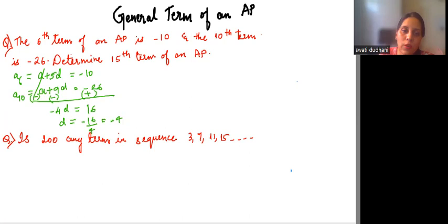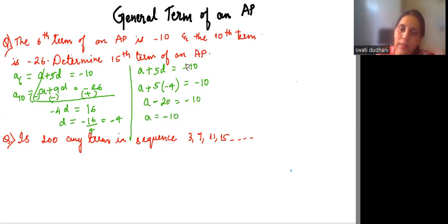So since we got D, we can substitute in any of the equations to find A. Let us take the smaller one which is the first one. A plus 5D equals minus 10. So A plus 5 into D which is negative 4 equals minus 10. So A minus 20 equals minus 10. When I transpose minus 20, it becomes plus 20. So the value of A we get is plus 10.